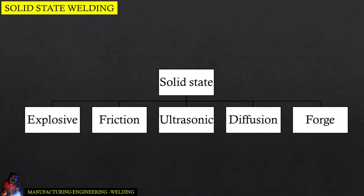Solid-state welding is a welding process in which two work pieces are joined under pressure, providing an intimate contact between them and at a temperature essentially below the melting point of the parent material. Bonding of the materials is a result of diffusion of their interface atoms.